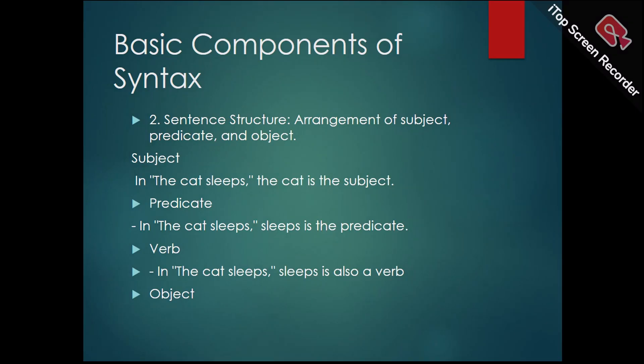Sentence structure: arrangement of subject, predicate, and object. Sentence structure refers to how words are organized within a sentence to convey a clear and complete idea. The subject answers the question who or what before the verb. In 'the cat sleeps,' the cat is the subject. The predicate is the part of the sentence that tells something about the subject. It includes the verb and can include additional information like objects or complements. The predicate explains what the subject is doing or what is happening to the subject. In 'the cat sleeps,' sleeps is the predicate.